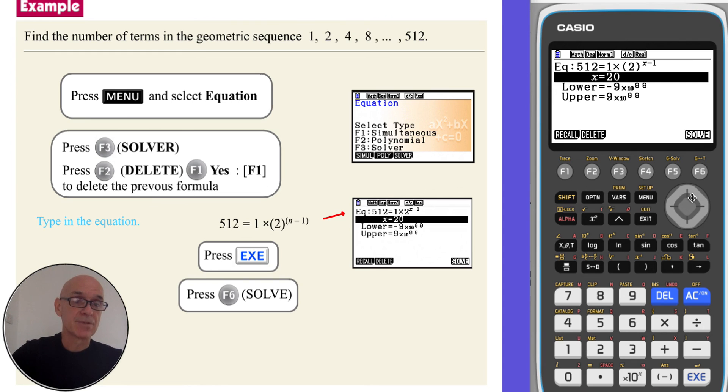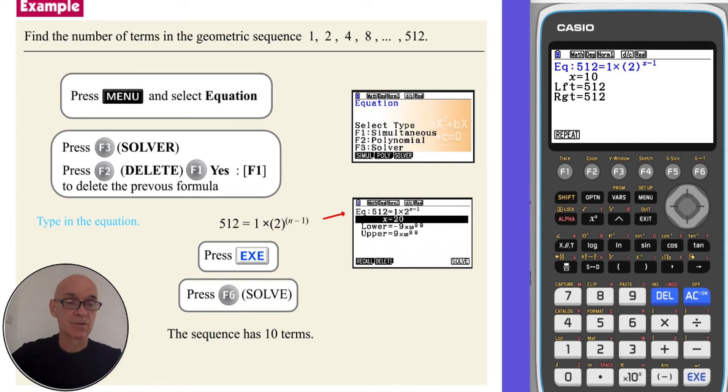So if we press F6 to solve the equation, we'll see that x or n in our case is 10. So the sequence has 10 terms.